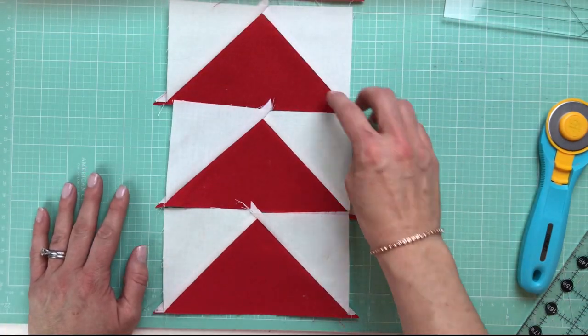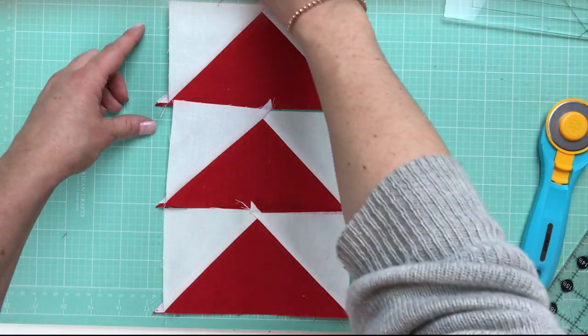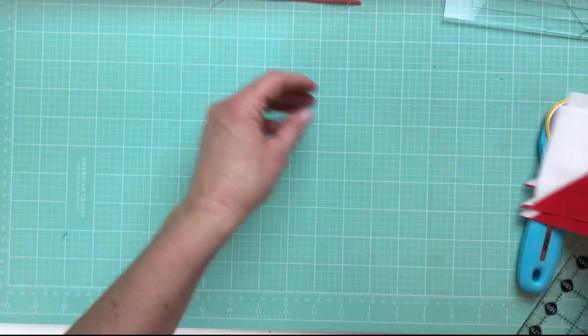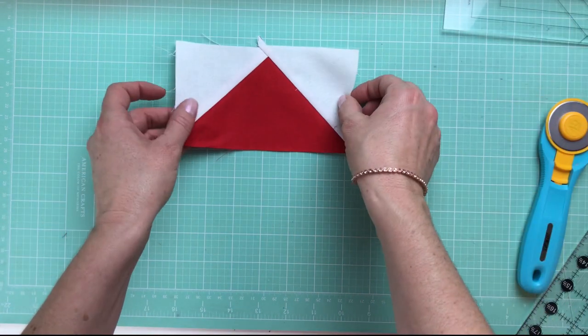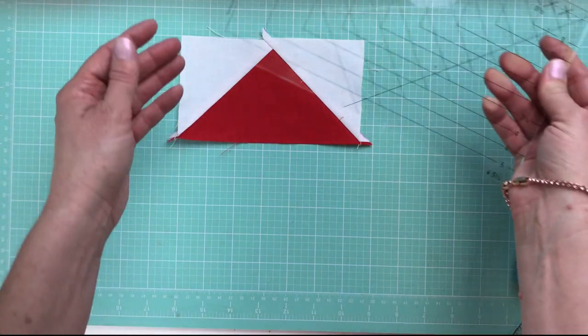Okay, we now have our four flying geese, and yours will have little dog ears here, and a little dog ear at the top. So let's start trimming. I'm going to move these aside, and let's look at this. Now, we are making 3½ inch by 6½ inch flying geese.